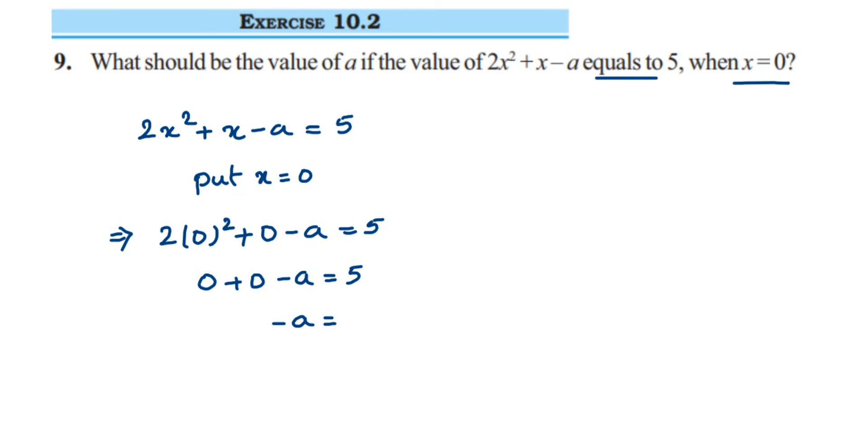So -a = 5. We want only the value of 'a', we don't want -a here, so we're going to multiply negative sign on both sides. So -(-a) equals -5.